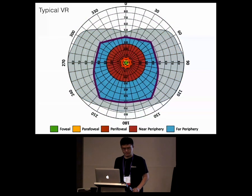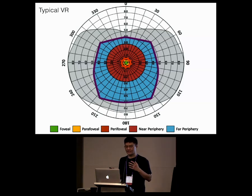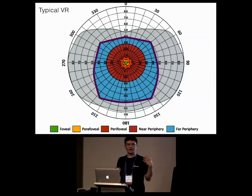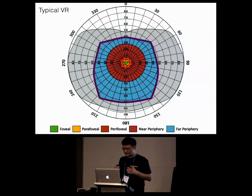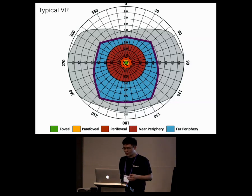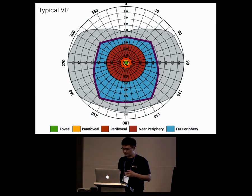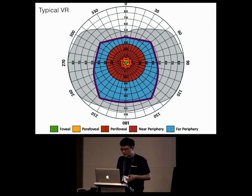By contrast, modern virtual reality systems with horizontal fields of view of around 90 to 110 degrees are like looking into binoculars. Even 100 degrees horizontal field of view, denoted by this purple box, discards huge swaths of our visual field. Although users might feel as if they're immersed in the virtual environment, they're really getting a kind of tunnel vision. The areas outside the VR display space are just black, which reduces spatial awareness and can impact immersiveness.